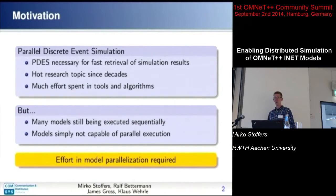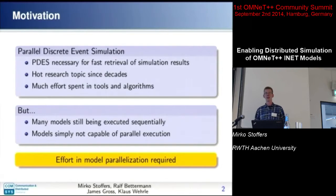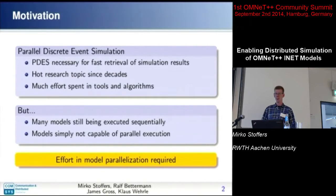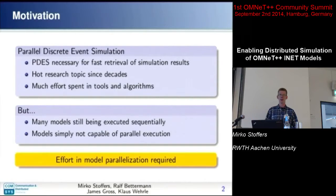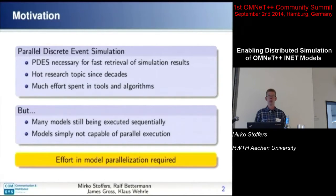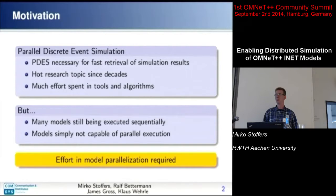I guess all of you have already heard about parallel execution, parallel discrete event simulation, and you know that it makes your simulation faster. There was a lot of research on that topic and it's included in OMNeT. Parallel execution has really been there for a long time. But when you look into the models and talk to modelers, most of them are still executing their models sequentially, simply because most models are not capable of parallel simulation yet.